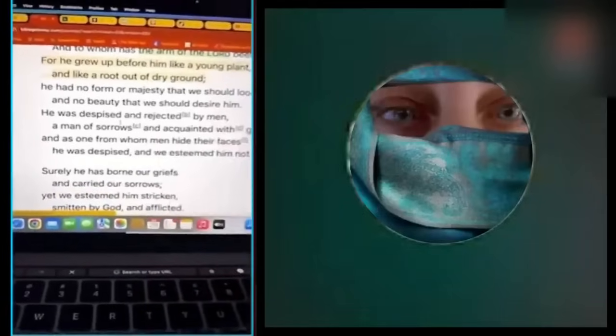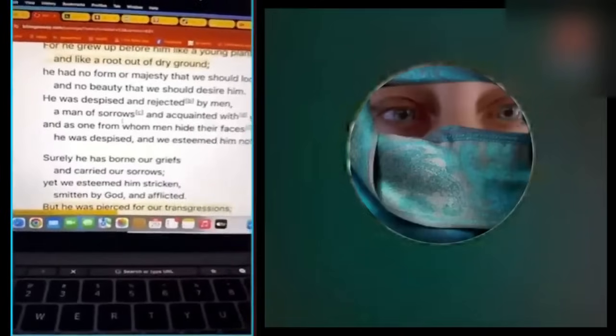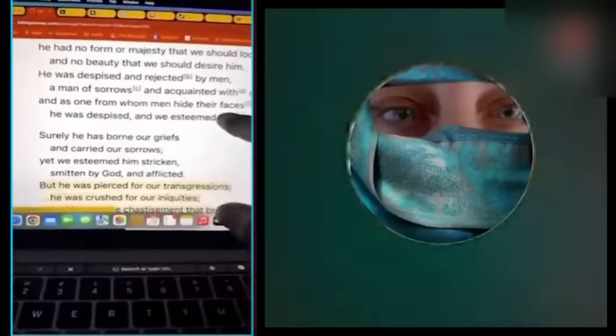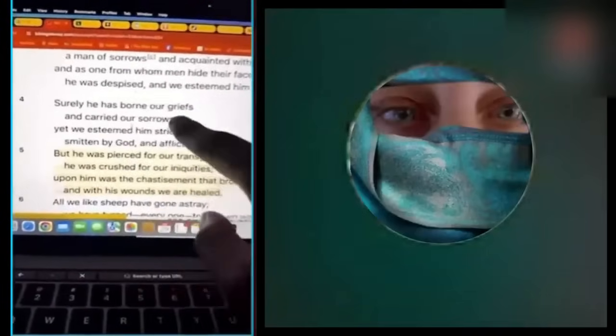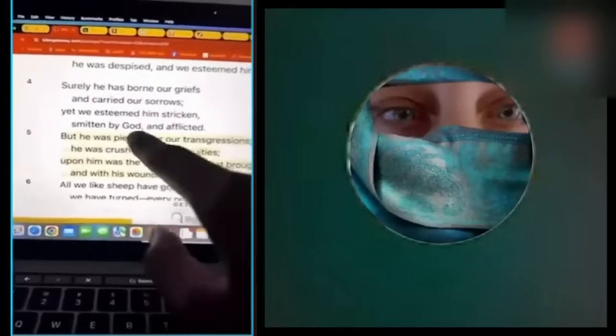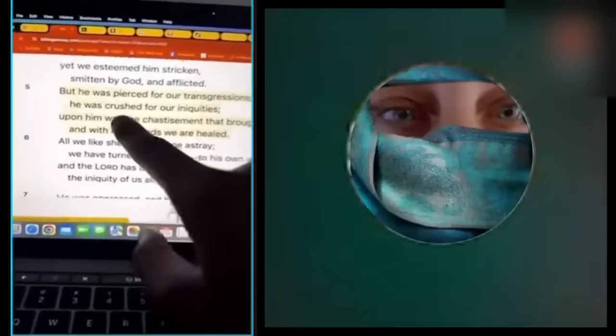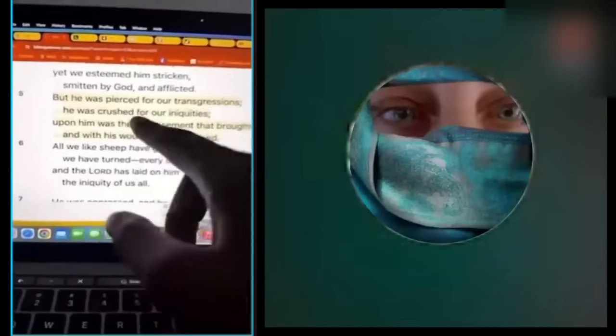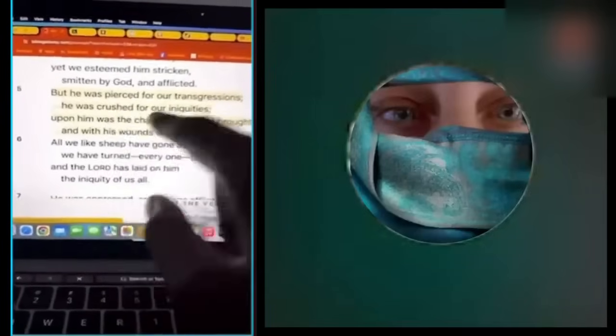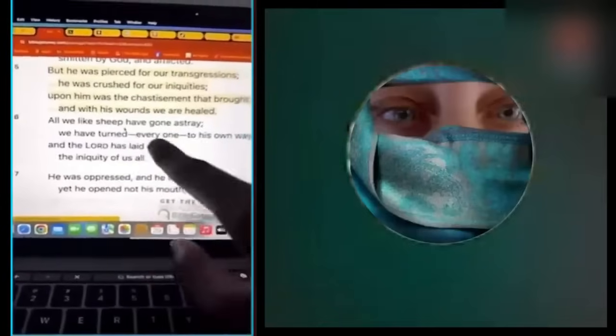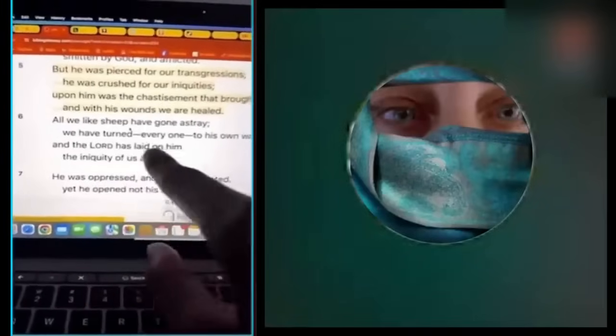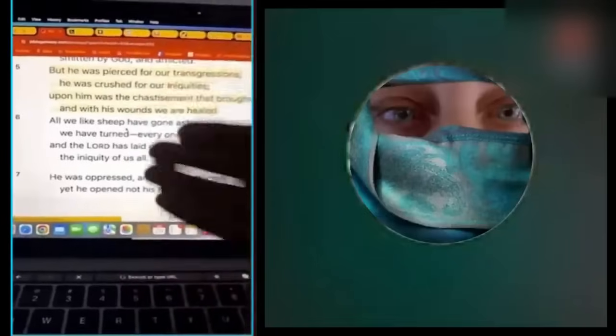He had no form or majesty that we should look at him, no beauty that we should desire him. He was despised and rejected by men, a man of sorrows and acquainted with grief. And as one whom men hide their faces, he was despised and we esteemed him not. But surely he has borne our griefs and carried our sorrows. Yet we esteemed him stricken, smitten by God and afflicted. But he was pierced for our transgressions. He was crushed for our iniquities. Upon him was the chastisement that brought us peace. And with his wounds, we are healed. All we like sheep have gone astray. We have turned everyone to his own way. And the Lord has laid on him the iniquity of us all.